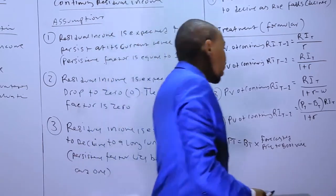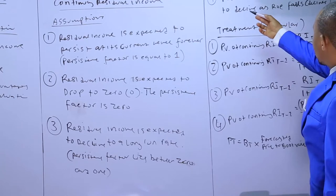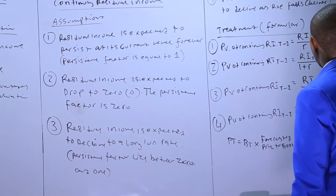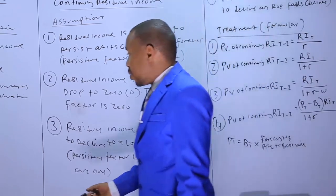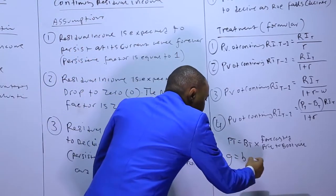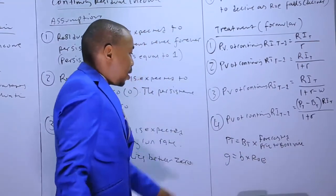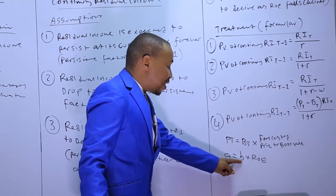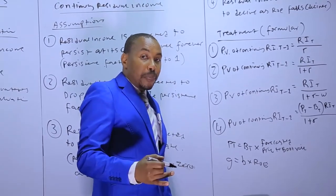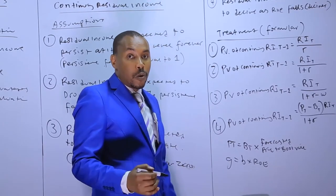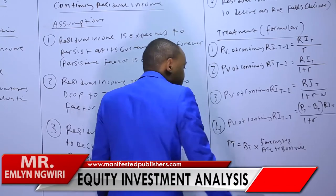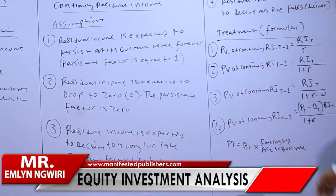Based on the fourth assumption, residual income is expected to decline as ROE falls. bt is the book value. ROE is return on equity, and under discounted dividend valuation, the growth rate is given as b times ROE, where b is the retention ratio. The return on equity itself is given as net income over sales, multiplied by sales over total assets, multiplied by total assets over shareholders' equity — please refer to that lecture for the full breakdown.